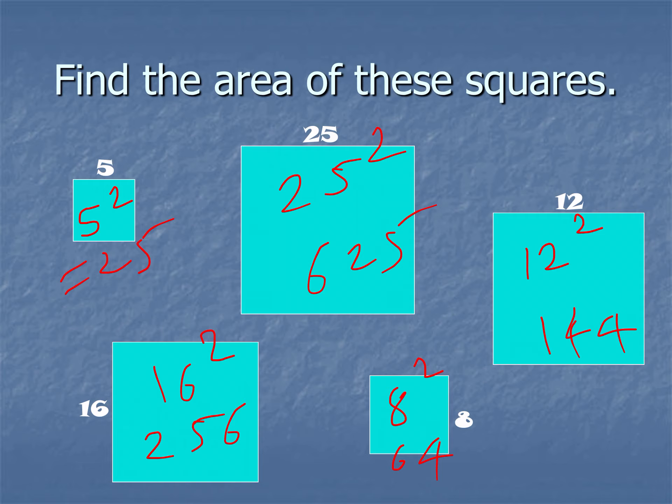So this is the complete knowledge about the area and the parameter of rectangles and squares. Your exercise 11.1 is completely based on this knowledge, so you have to try it. If you have any kind of doubt, then you can ask me later. Thank you.